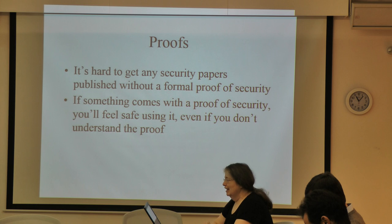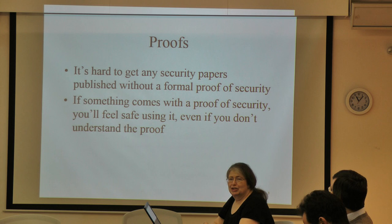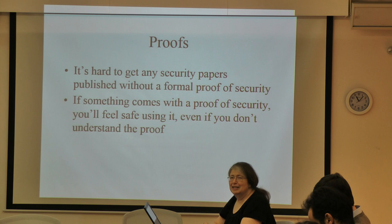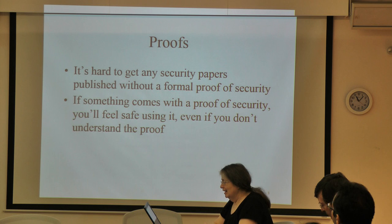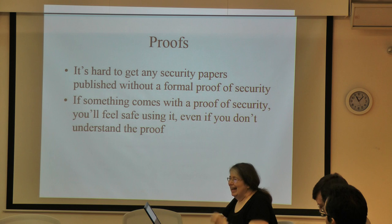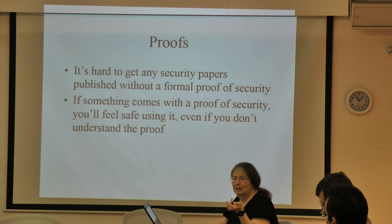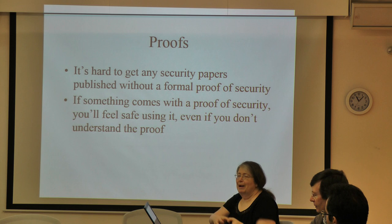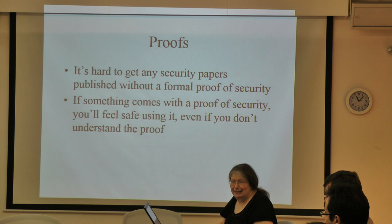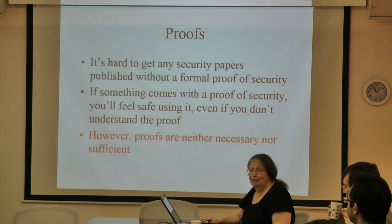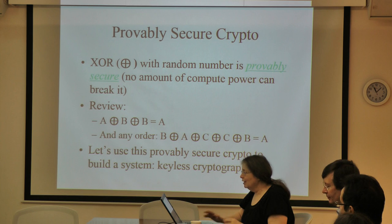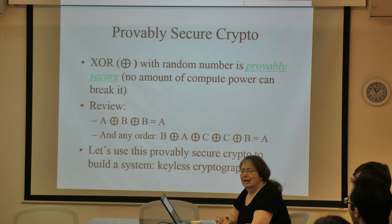One thing is proofs. It's hard to get any security paper published without a formal proof of security, but these proofs tend to focus on just the math rather than the system design. If something comes with a proof of security, you feel safe using it even if you don't understand the proof—and sometimes the proof assumes properties there's no particular reason to believe are true. Proofs are neither necessary nor sufficient. Sometimes they're another way of finding bugs, but you can't just rely on them.